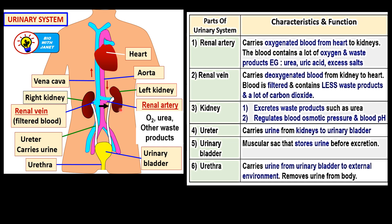The kidney excretes waste products such as urea, and it also regulates the blood osmotic pressure and the blood pH. The ureter carries urine from the kidneys to the urinary bladder — it's the tube-like structure here. The urinary bladder is a muscular sac that stores urine before excretion. And lastly, the urethra is a short tube below the urinary bladder whose function is to carry urine from the urinary bladder to the external environment when a person passes out the urine.